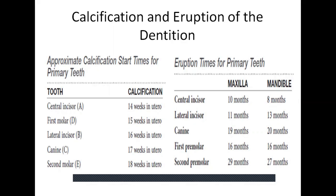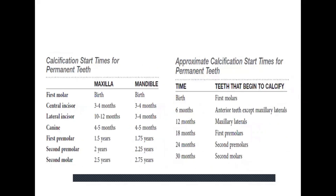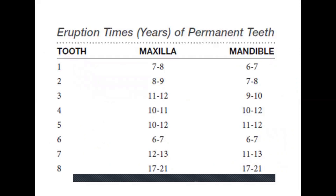Knowledge of the calcification time of permanent teeth is important. If a practitioner sees a pattern of hypoplasia or hypocalcification of permanent teeth, the approximate time of the cause can be determined, which can aid the dentist in counseling the patient regarding unanticipated enamel defects. The average time for crown formation is approximately 4 to 5 years, except the first molars which take around 3 years and canines which take around 6 years.